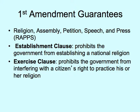Let's move on to the First Amendment, which you know well. For freedom of religion there are two parts: the establishment clause and the exercise clause. The establishment clause says a government institution cannot establish a national religion — for example, I cannot tell students to pray in class. The exercise clause says the government cannot interfere with a citizen's right to practice his or her religion.